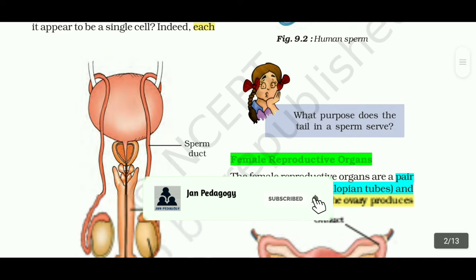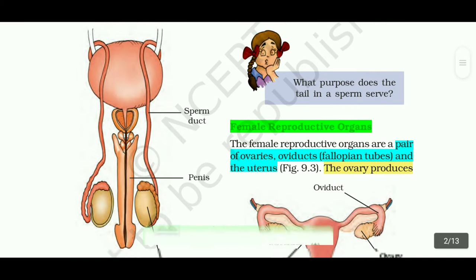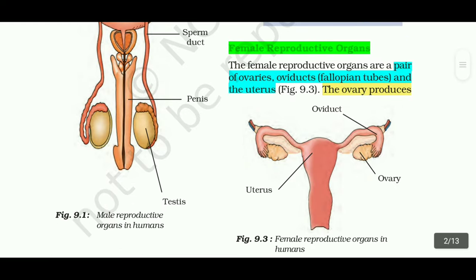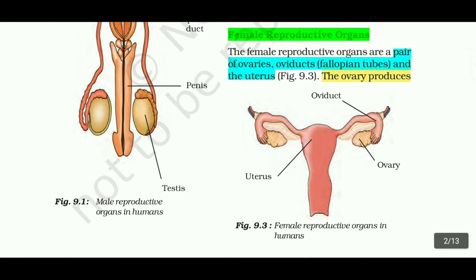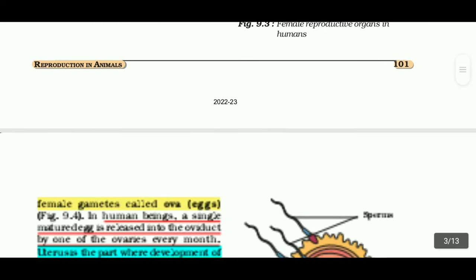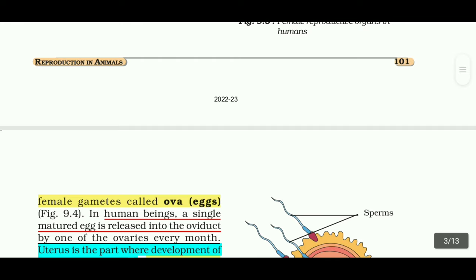We are moving on to female reproductive organs. The female reproductive organs are a pair of ovaries, oviducts (that means fallopian tubes), and a uterus, as shown in figure 9.3. The ovary produces female gametes called ova, or eggs. In human beings, a single mature egg is released into the oviduct by one of the ovaries every month.